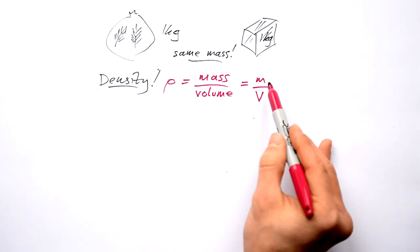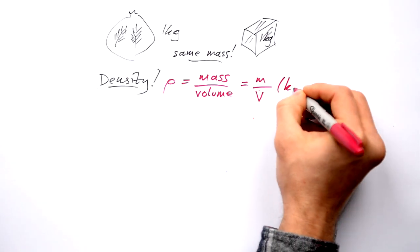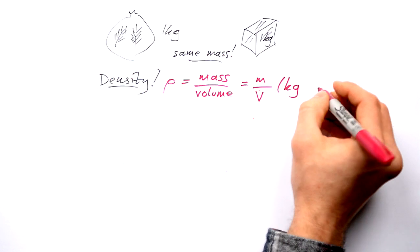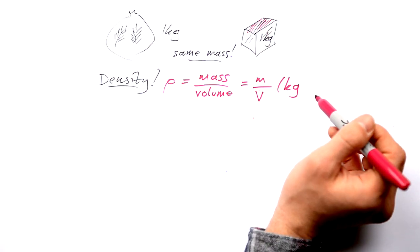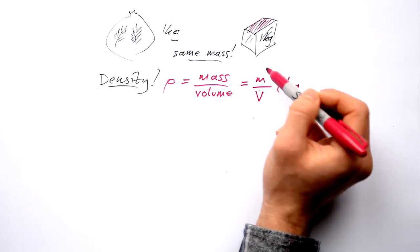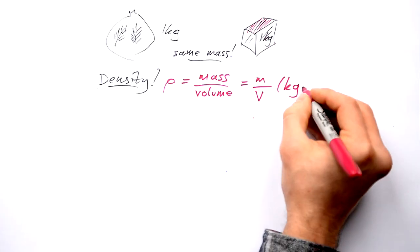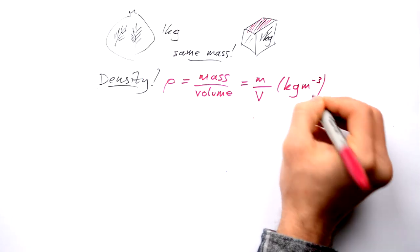What's the units of this going to be? Mass is kilograms. It's going to be divided by volume. Area is meters squared if we look at one face of this block here. But volume is this area times the depth as well. So it's going to be meters cubed. So it's kilograms per meter cubed.